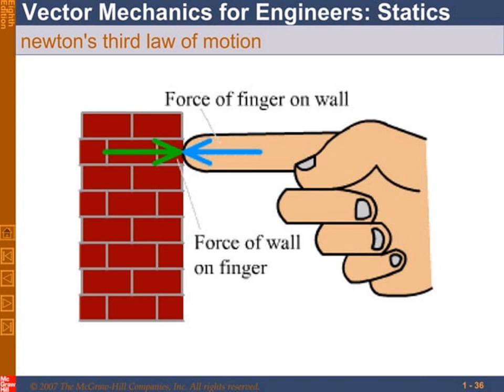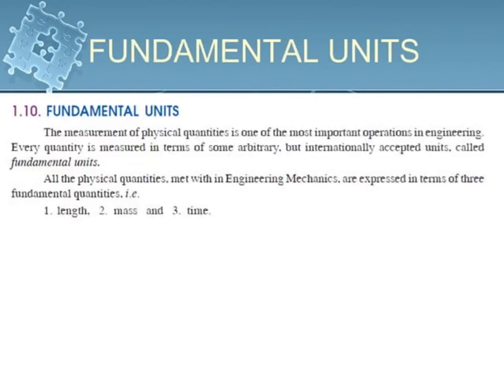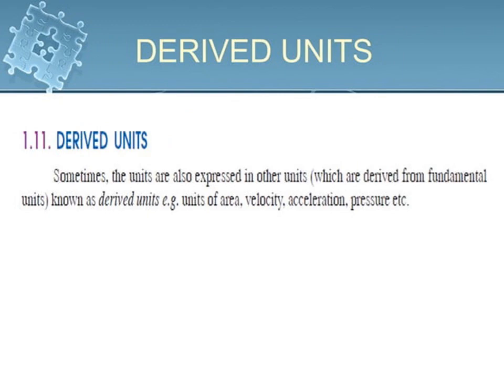Next, we go for units — fundamental units and derived units. Fundamental units are: Length, Mass, and Time. With the help of these fundamental units, we derive some units, which are called derived units. For example, length and breadth are fundamental units; by combining them we derive area, which is a derived unit. Other derived units include velocity, acceleration, and pressure.